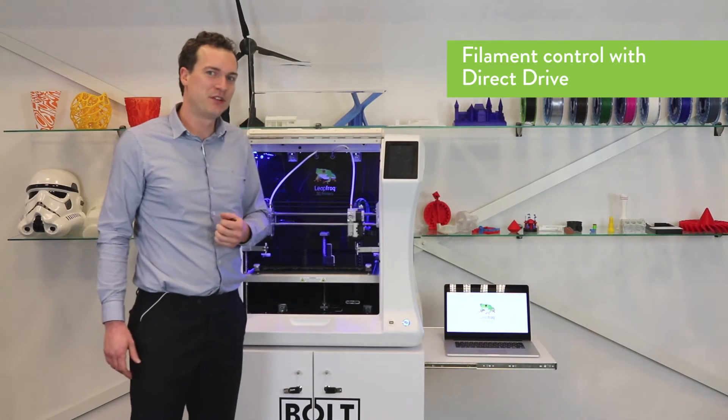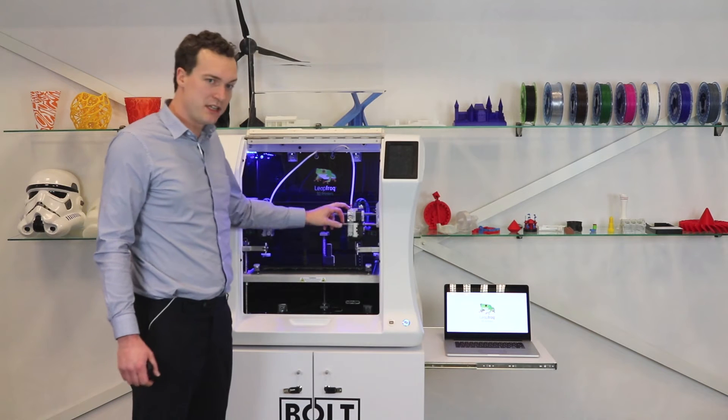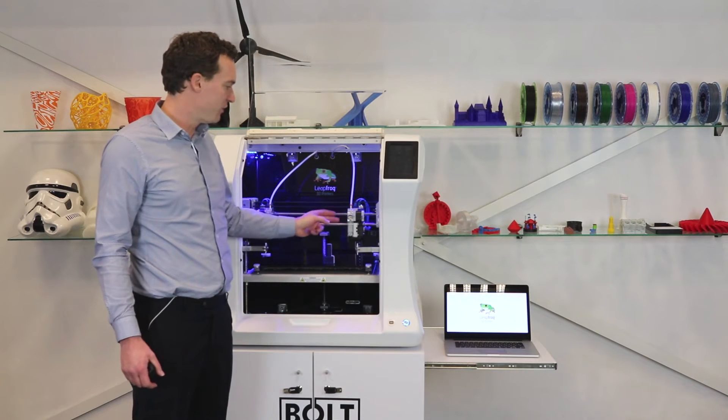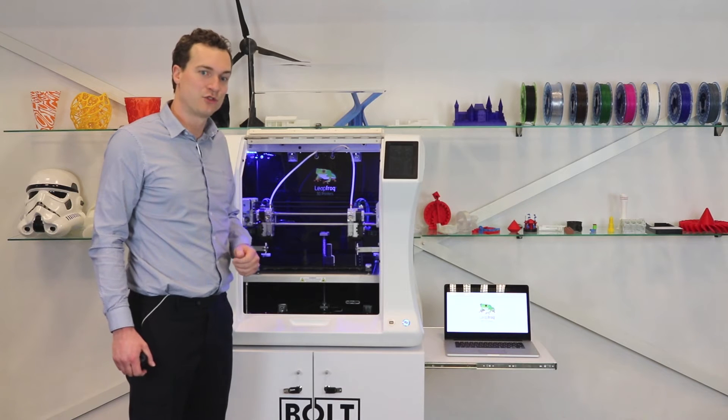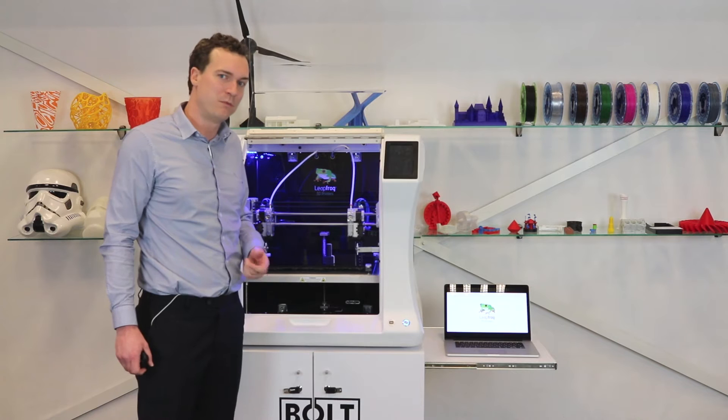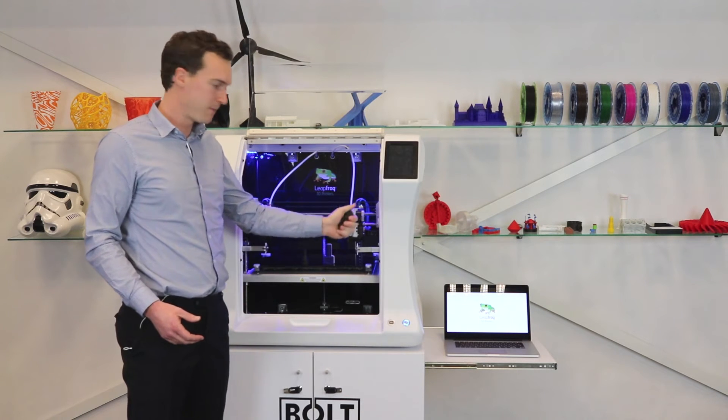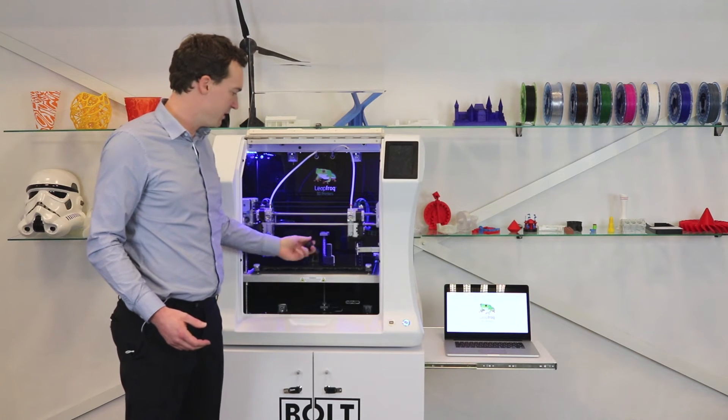Another feature of the Bolt I wanted to emphasize is its direct drive. This means that the filament flow is controlled very close to the nozzle, giving us very precise control over how much filament comes out of the nozzle. This is especially useful when printing flexible materials. For instance, this elephant was printed with flexible material.